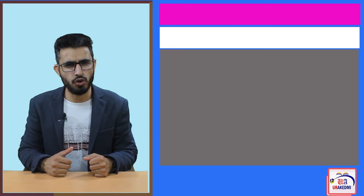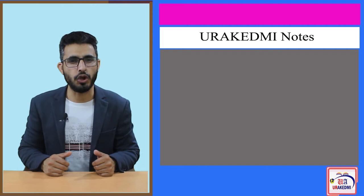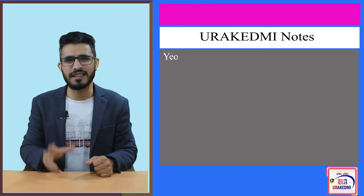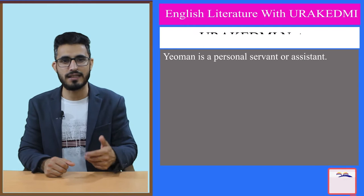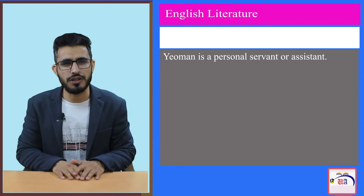Coming to today's lecture, which is on the Yeoman: a Yeoman is a personal servant and assistant. In medieval times, he would be the assistant of some influential personality — a person of high degree or status in society. Here in the General Prologue, the Yeoman we will deal with would be the servant either of the Knight or of the Squire.